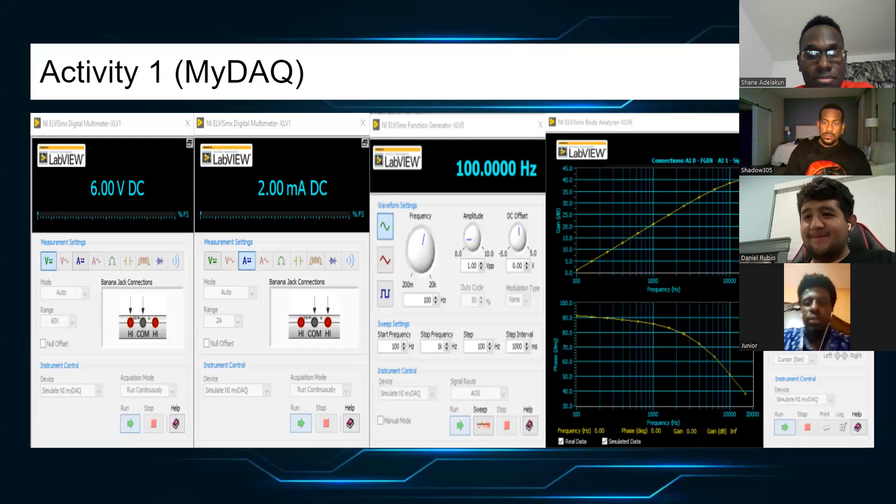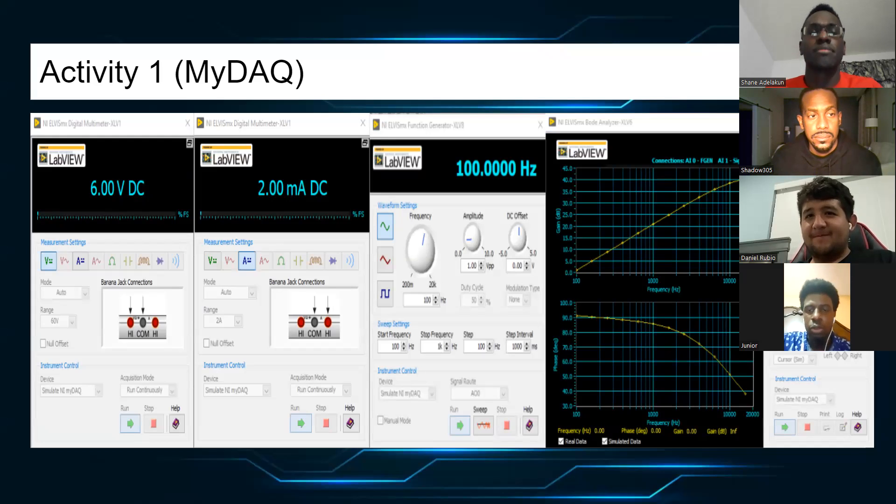So this is the MyDAQ result. As you can see, the top part of the graph increases, which is the gain, and the bottom part decreases to 100,000 Hz.